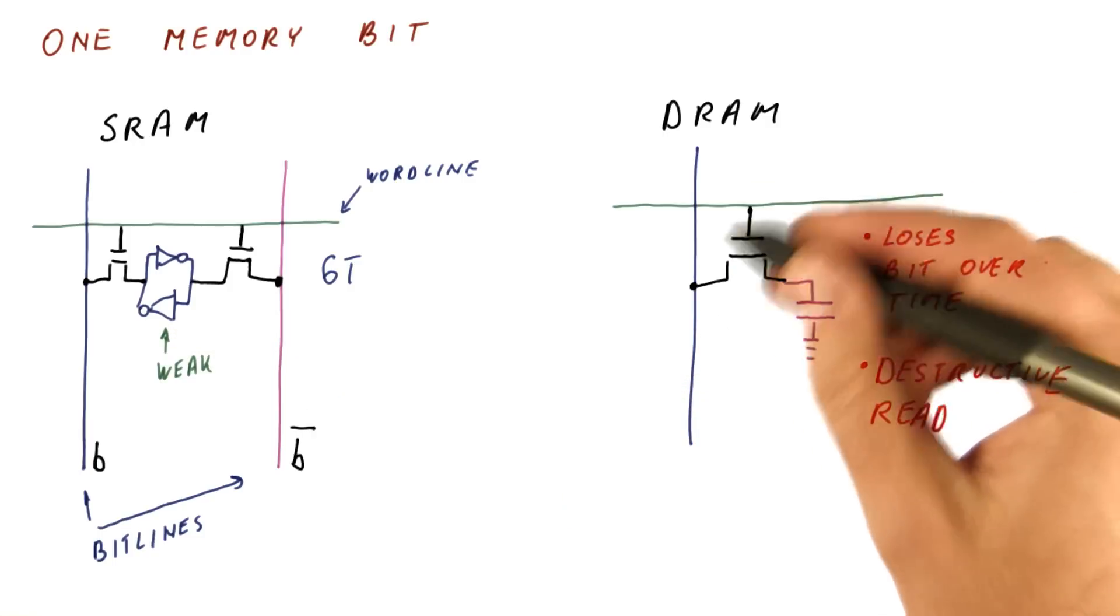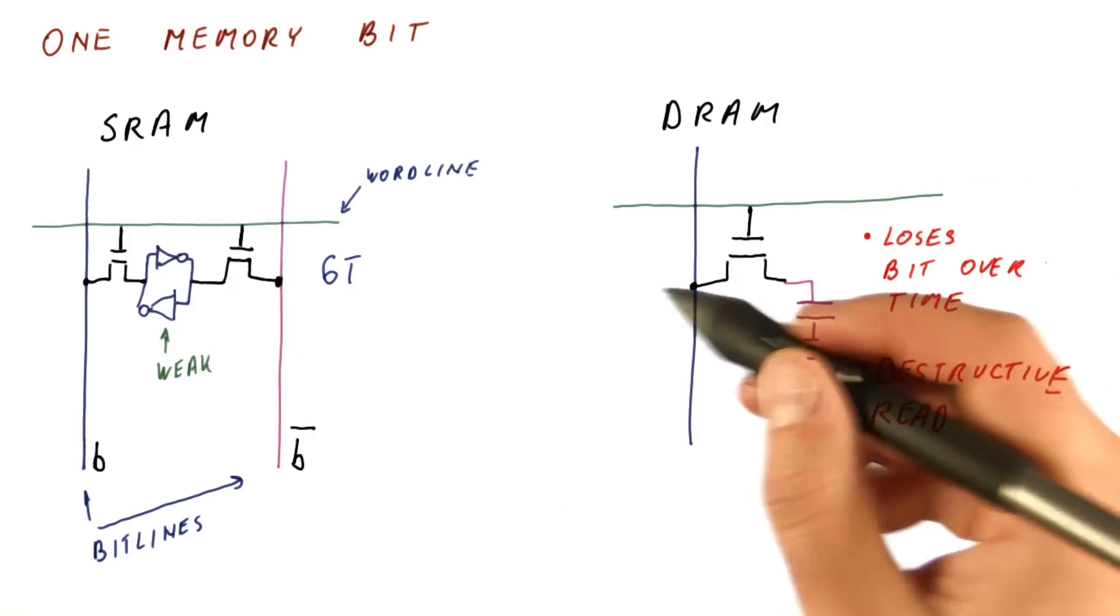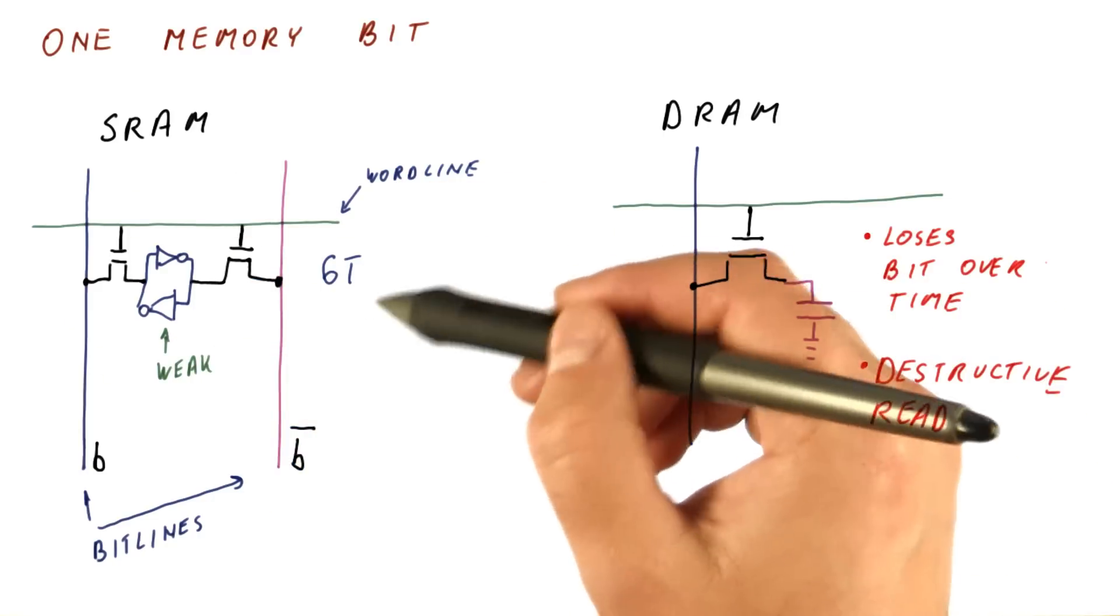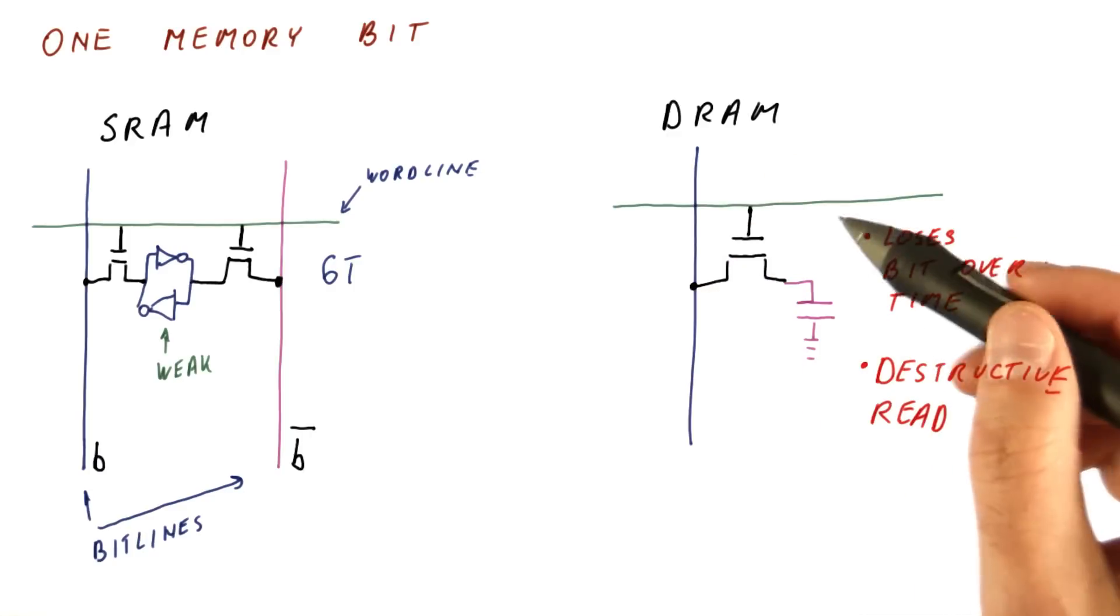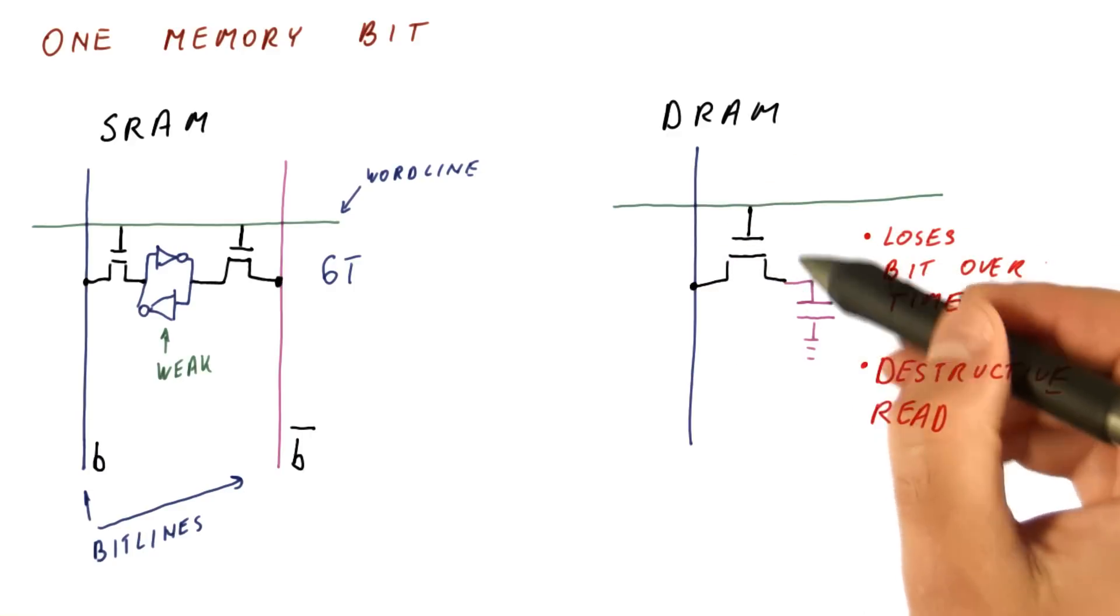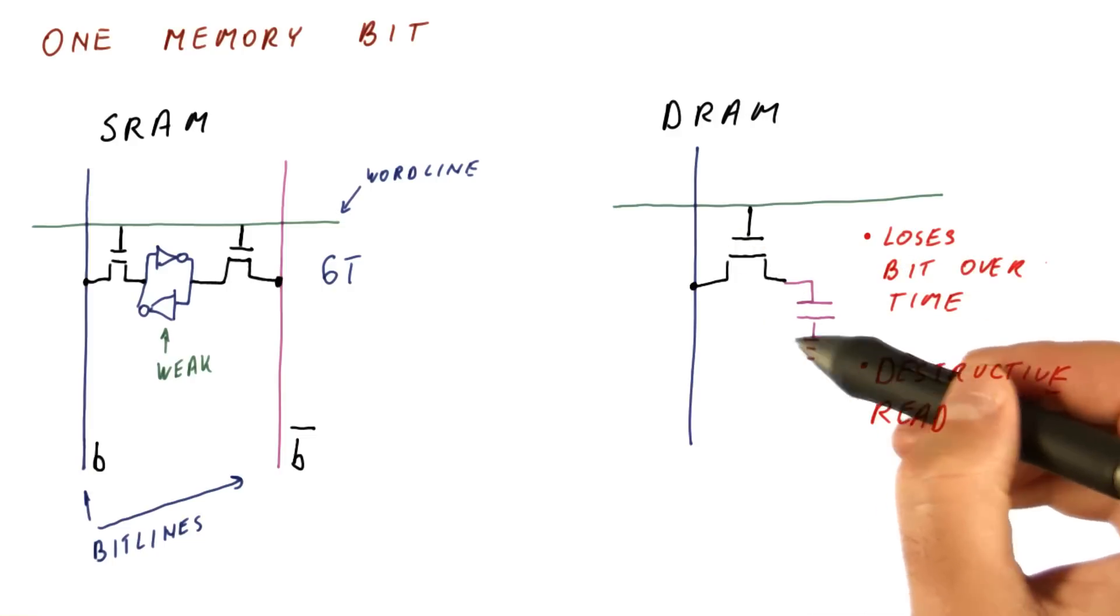This is, of course, a 1T cell. Now, the area occupied by an SRAM cell obviously is the area occupied by about six transistors. The area of the DRAM cell, it looks like it's the area of one transistor and the area of a capacitor.